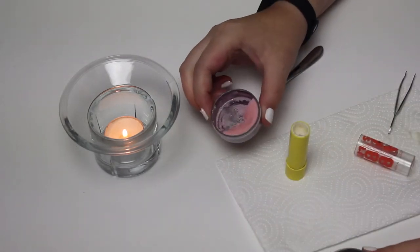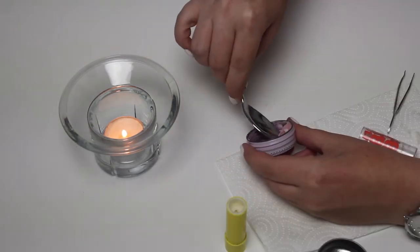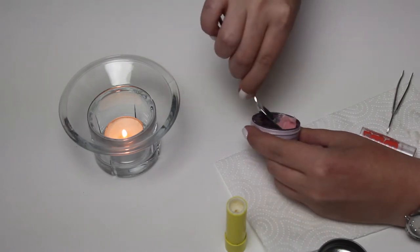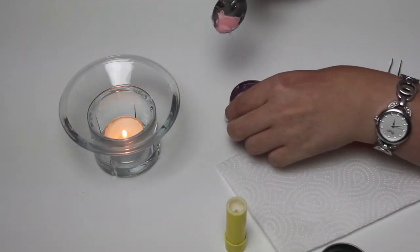I will just take the lip balm I want to depot and a teaspoon. I am going to scoop out a small bit and then put it over the candle so it can melt.